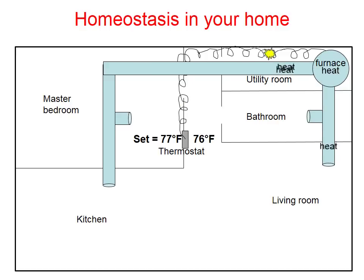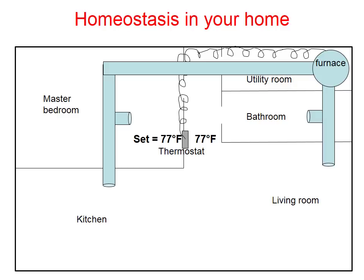That heat will be pumped out of all the heating vents until eventually your home begins to warm back up — 75, 76, 77 degrees. At that point, the thermostat will stop sending a signal to the furnace. The furnace will stop producing heat because the home is back to normal — a great analogy of homeostasis.